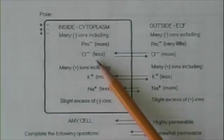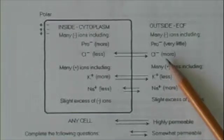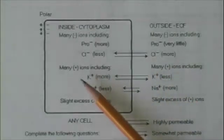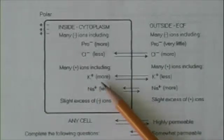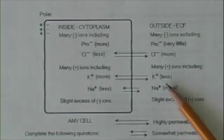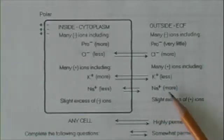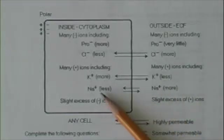Chloride on the other hand, a negative ion, is less abundant inside the cell, but there's more of it in the surrounding extracellular fluid. A lot of positive ions exist. Potassium is more abundant inside the cell than it is outside. Sodium is just the reverse. More abundant on the outside than on the inside.